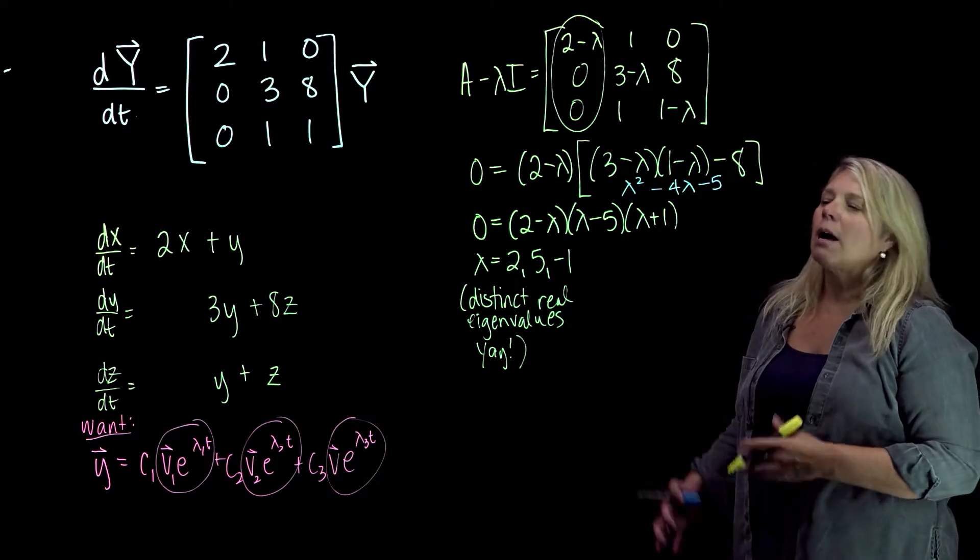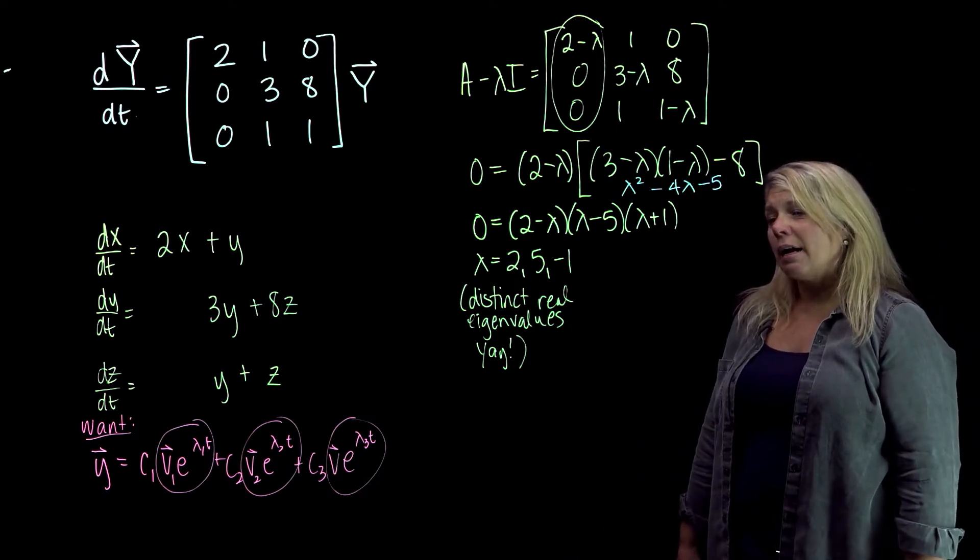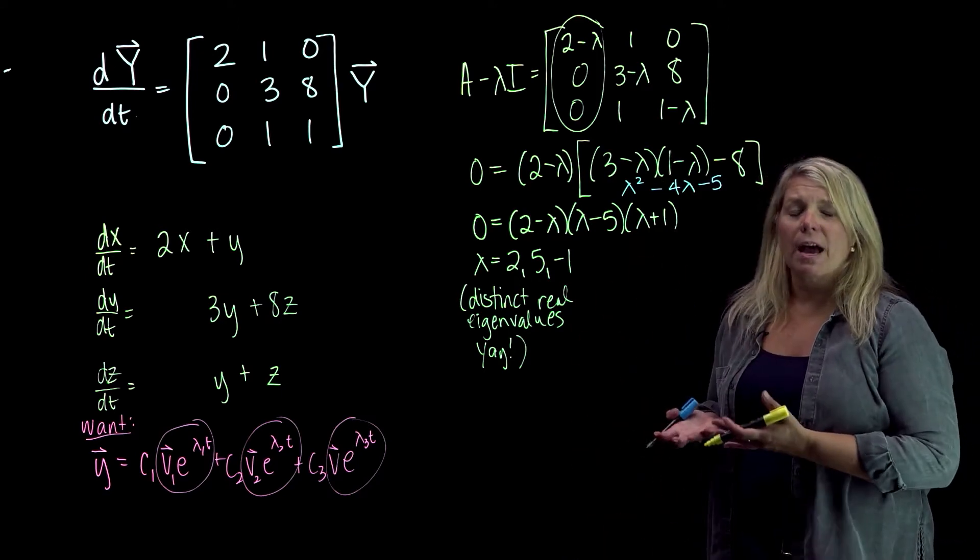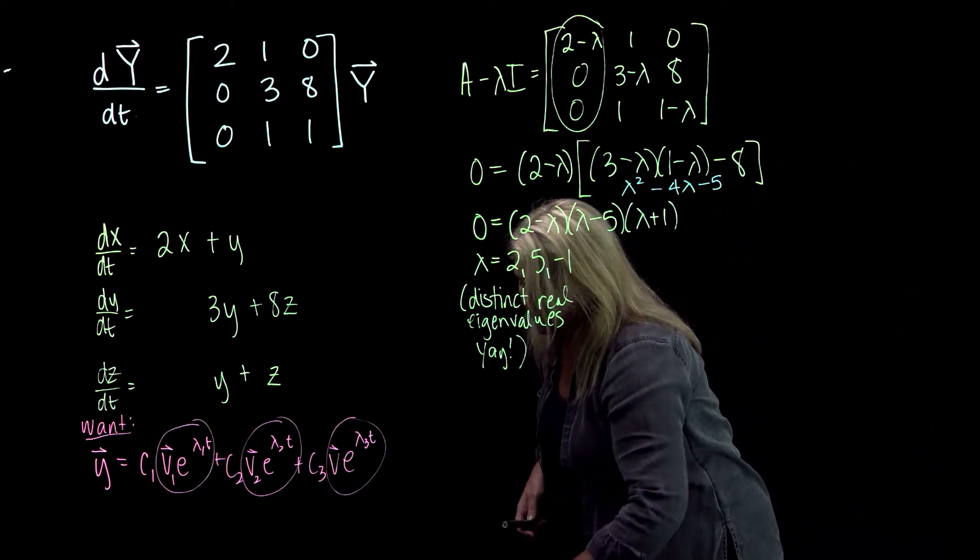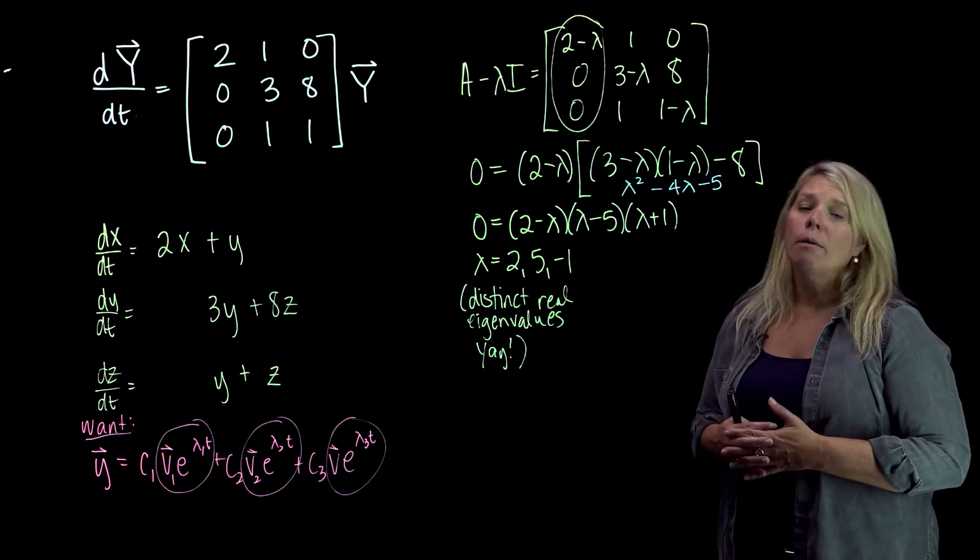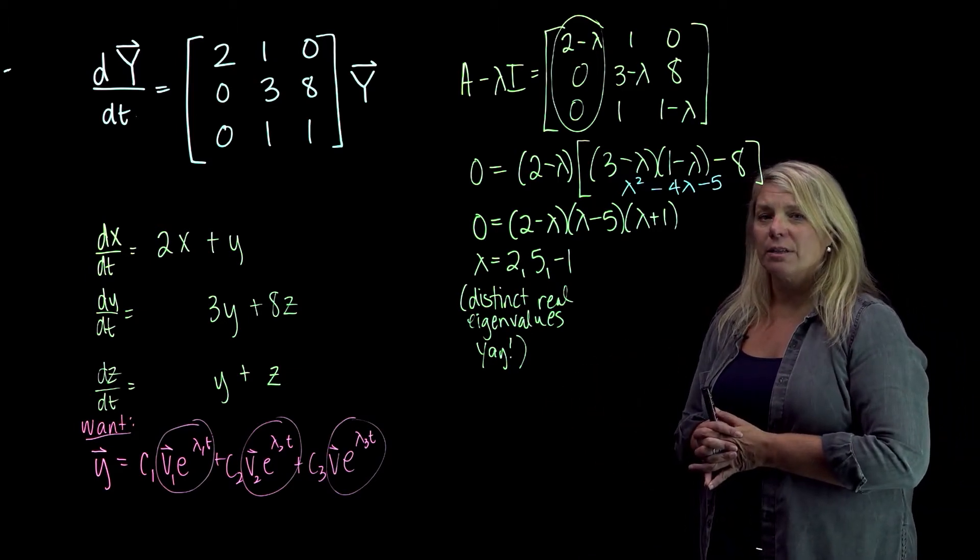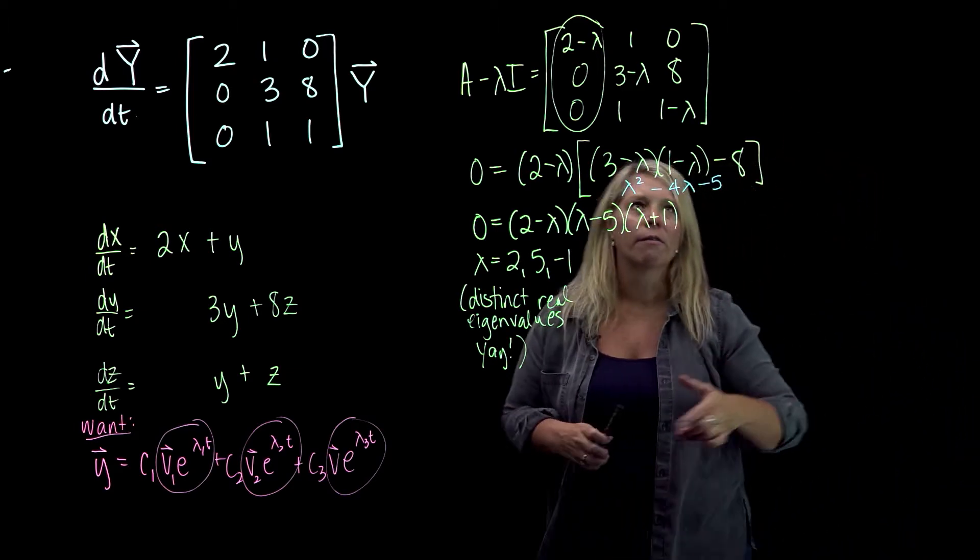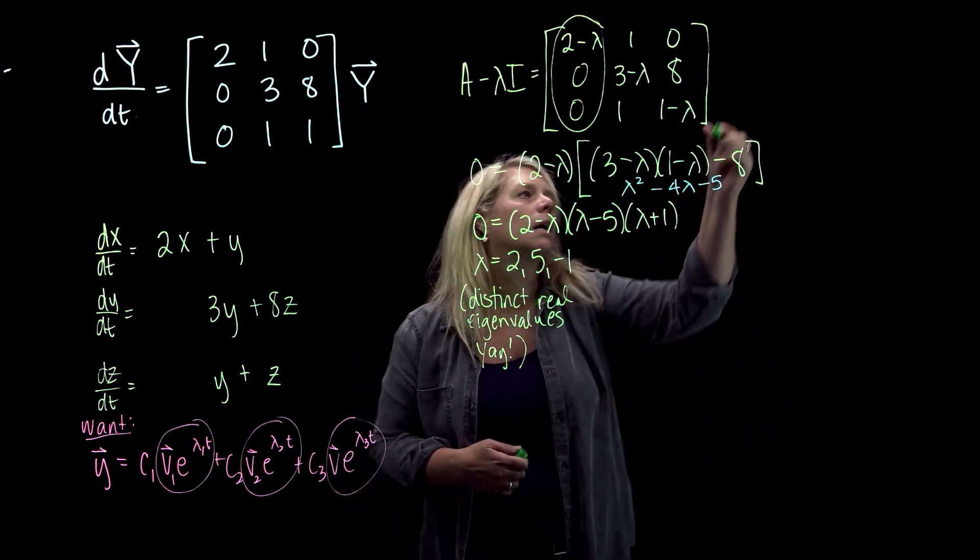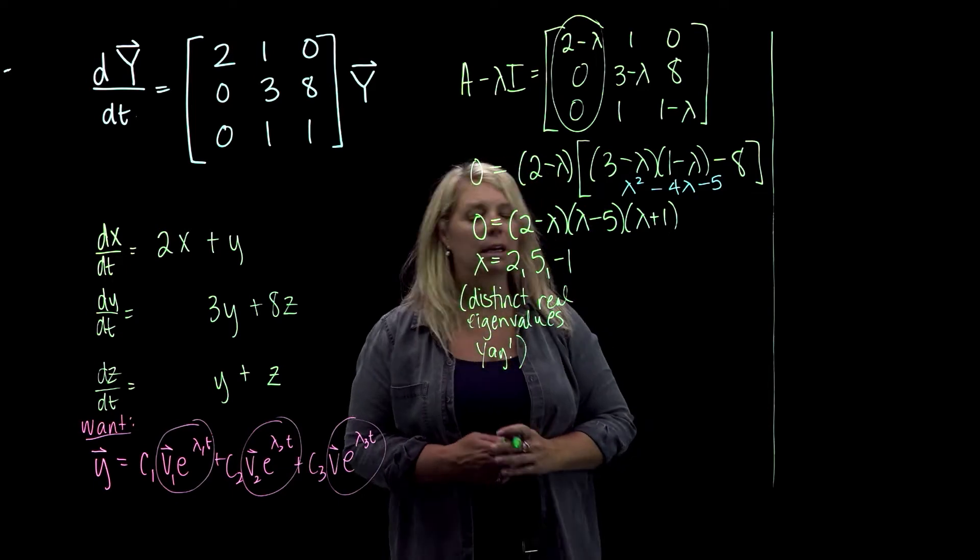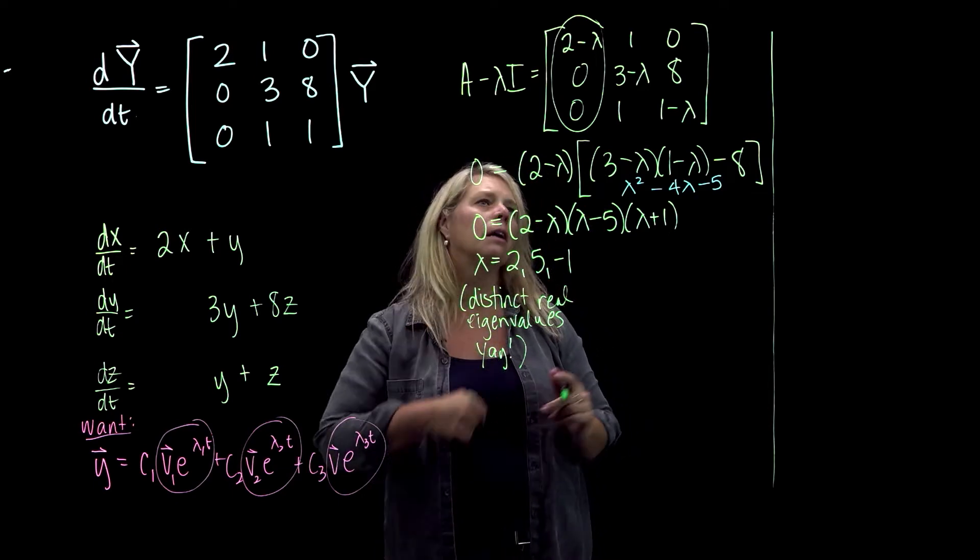Okay, so now I just need to find an eigenvector that is the basis for the eigenspace for each of these eigenvalues. So sort of three little short problems. At this point, hopefully, finding those eigenvectors is not too tricky. I'm going to go over here and do each of those. Let's see, I'm just going to draw a line here so everything doesn't go stuck together.